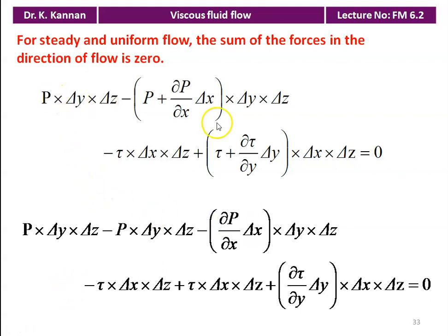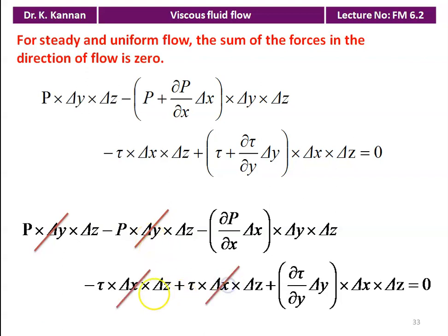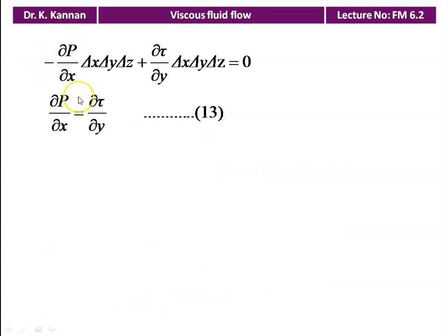Expanding the terms: −∂P/∂x·δx·δy·δz + ∂τ/∂y·δy·δx·δz = 0. Cancelling the common factor δx·δy·δz, the final equation is: ∂P/∂x = ∂τ/∂y. This states that the change in shear stress with respect to y equals the pressure gradient ∂P/∂x.